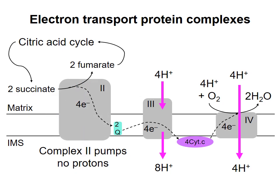Complex II does exist, and it is the enzyme that catalyzes the citric acid cycle reaction converting succinate to fumarate. This is a redox reaction that reduces coenzyme Q to QH2. The QH2 produced is chemically identical to the QH2 produced by complex I, and it will give its electrons to complex III as described in the previous video. So complex II represents another pathway through which electrons are removed from carbon during the citric acid cycle and transferred ultimately to molecular oxygen.